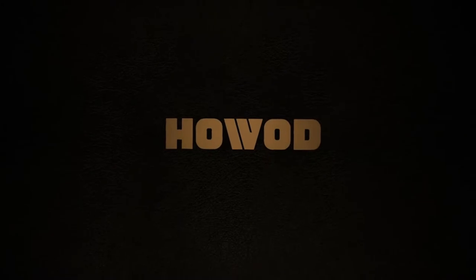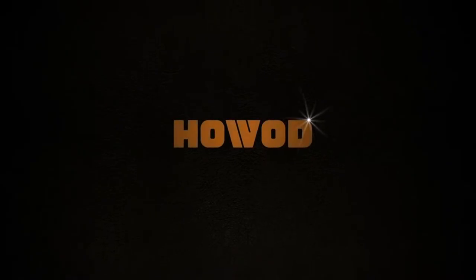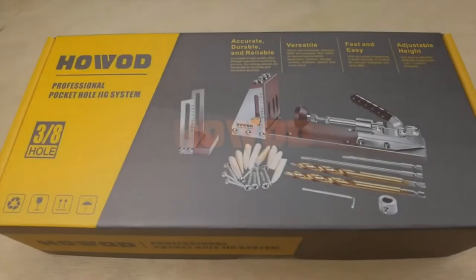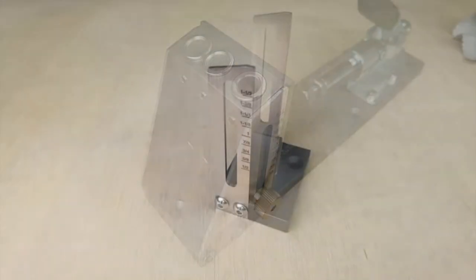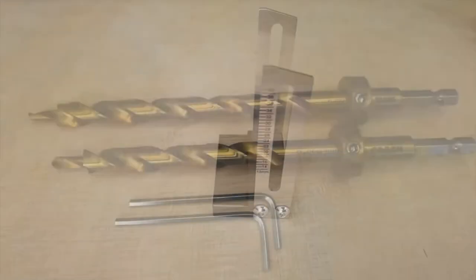Welcome to Outdoor Ideal. Product name: Howood pocket hole jig kit. Accurate, durable, and reliable, high-quality all-metal construction is much more durable than plastics and glass-filled nylon alternatives.